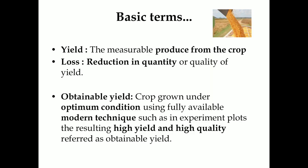Regarding basic terms — what is yield? It is the produce obtained from the crop. Next, what is loss? It is nothing but reduced yield in terms of quality and quantity. Next, what is obtainable yield? In case of obtainable yield, it is the high yield of high quality obtained from a crop grown using modern techniques, referred to as obtainable yield.